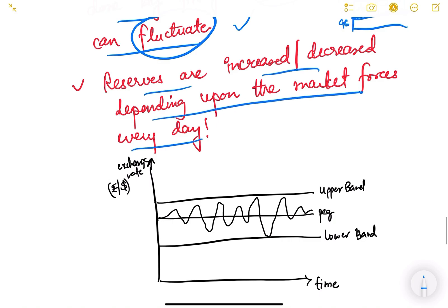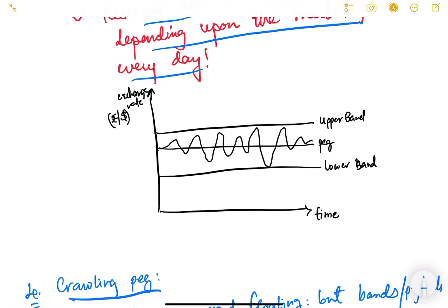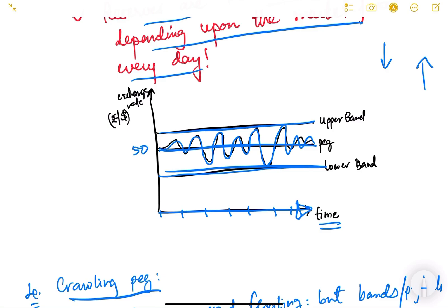In managed floating, forex reserves are increased or decreased depending on daily market forces. If there is extra demand for dollars, RBI supplies from reserves (reserves decrease); if demand is low, RBI may add to reserves (reserves increase). On a graph with time on the x-axis and exchange rate on the y-axis, the peg is set at say 50 rupees per dollar with an upper and lower band, and the exchange rate fluctuates within this band over time.